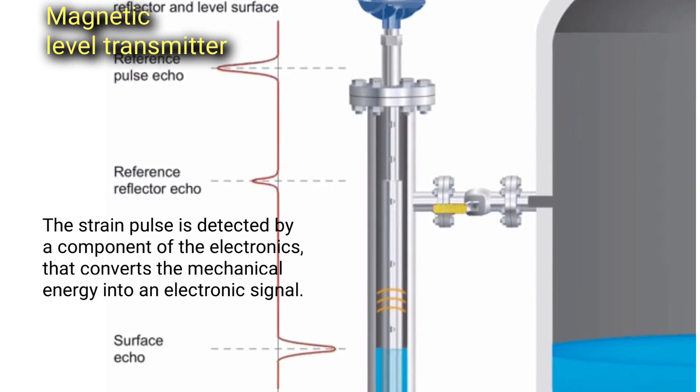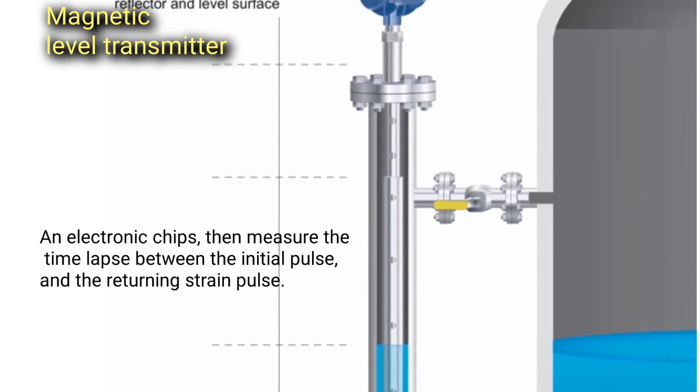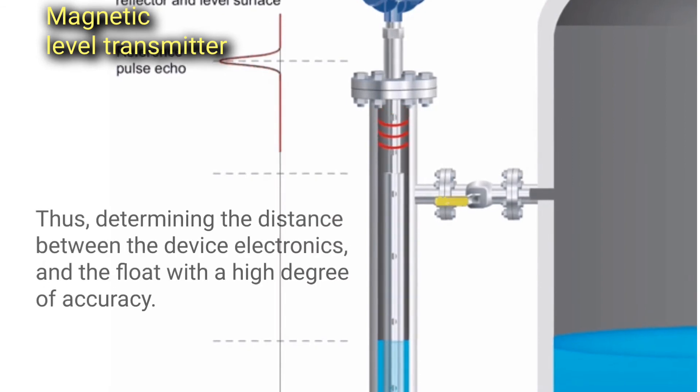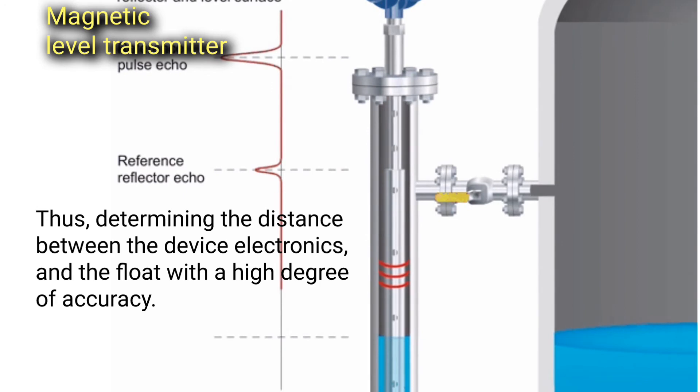This converts the mechanical energy into an electronic signal, and electronic chips then measure the time lapse between the initial pulse and the returning strain pulse, thus determining the distance between the device electronics and the float with a high degree of accuracy.